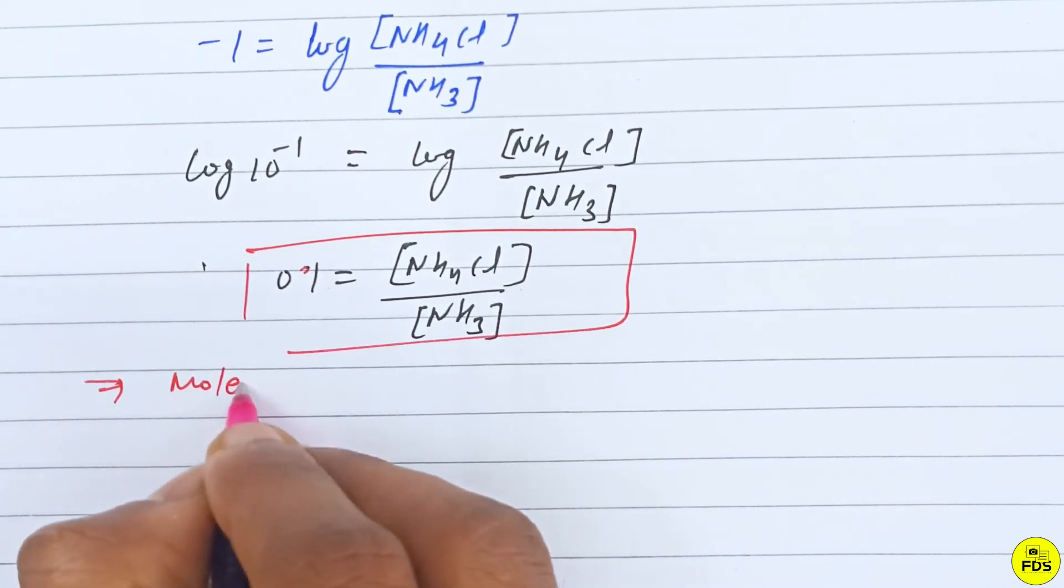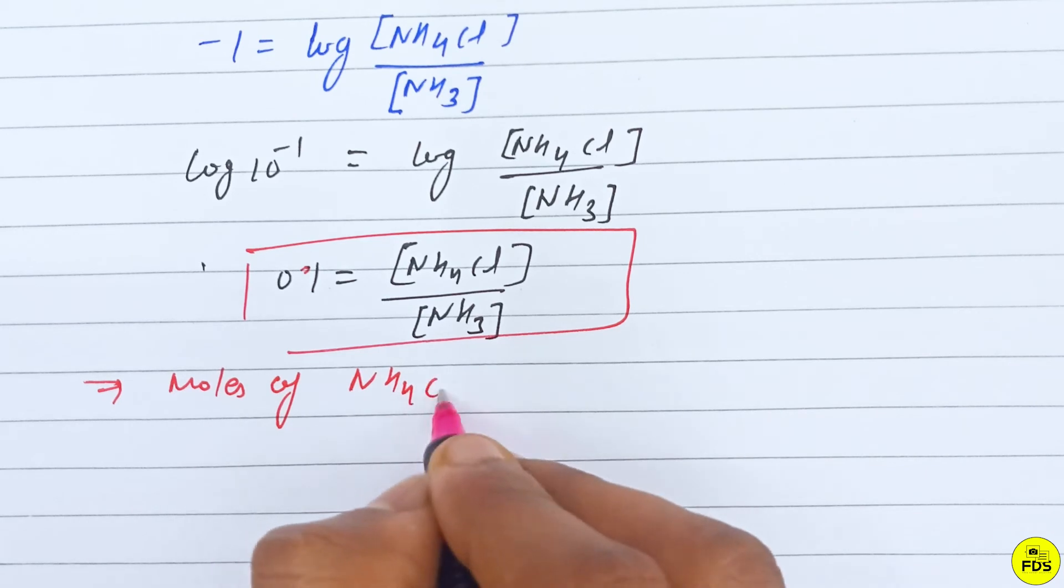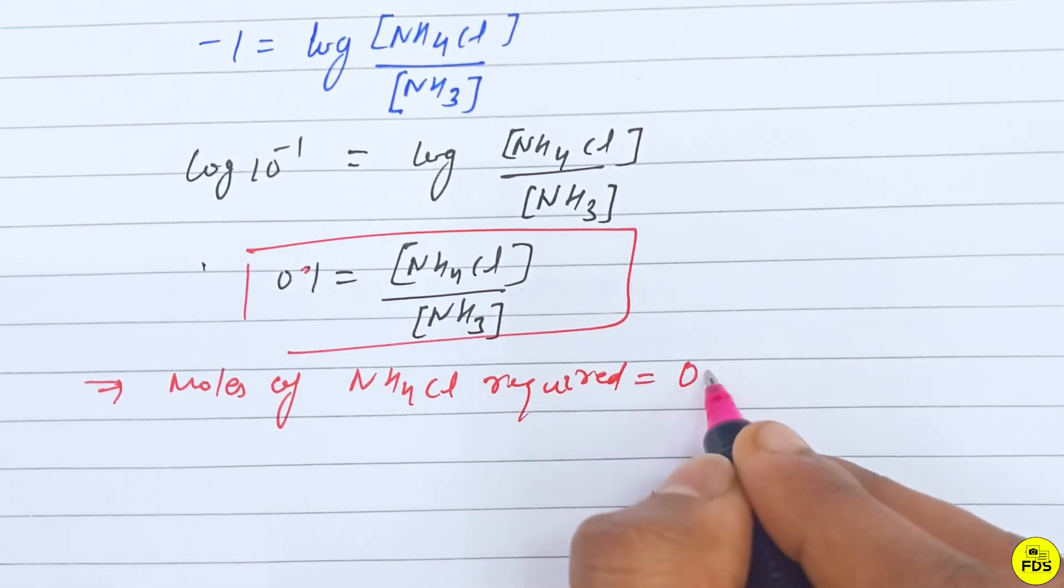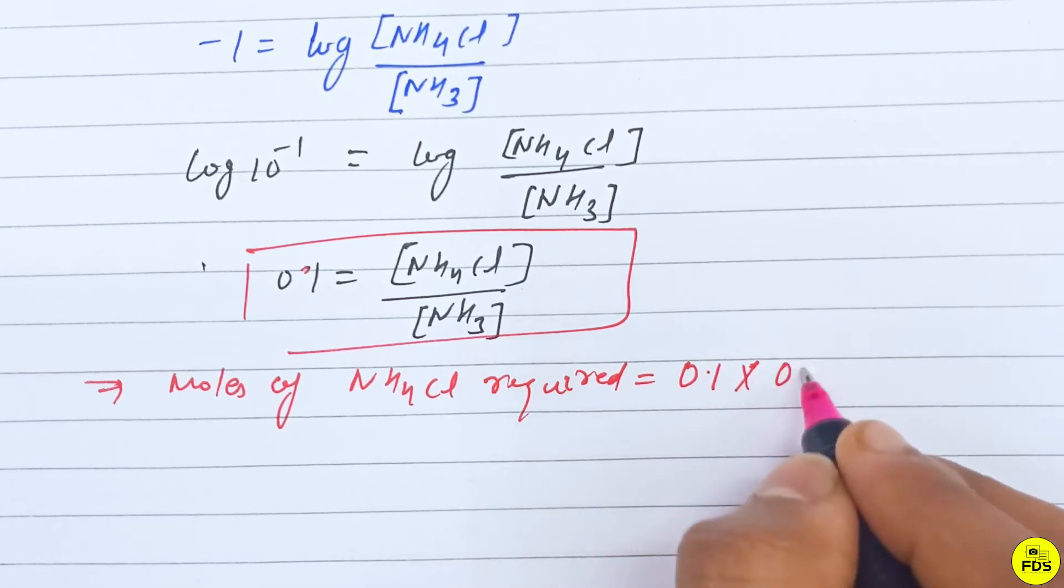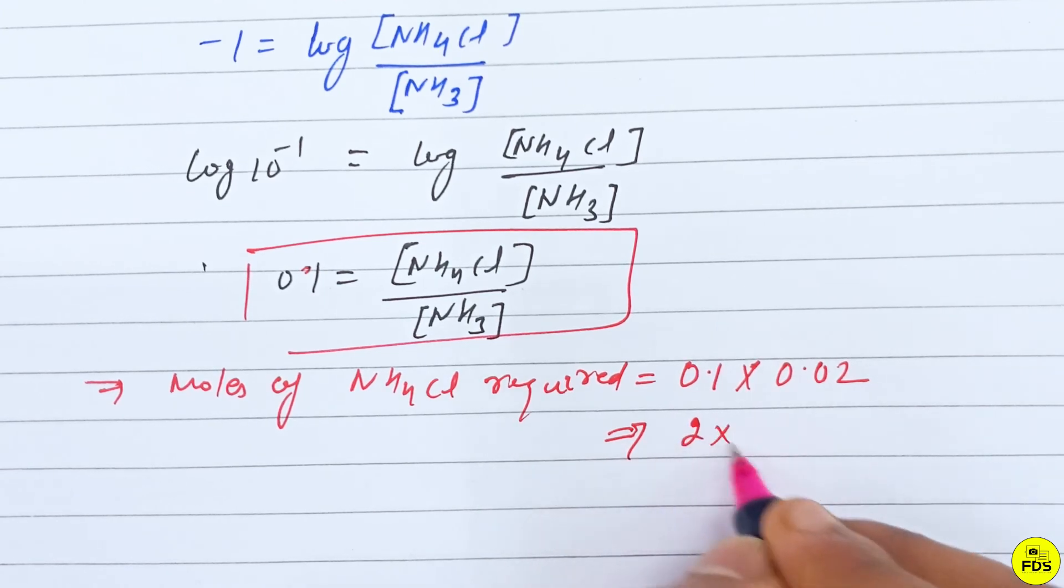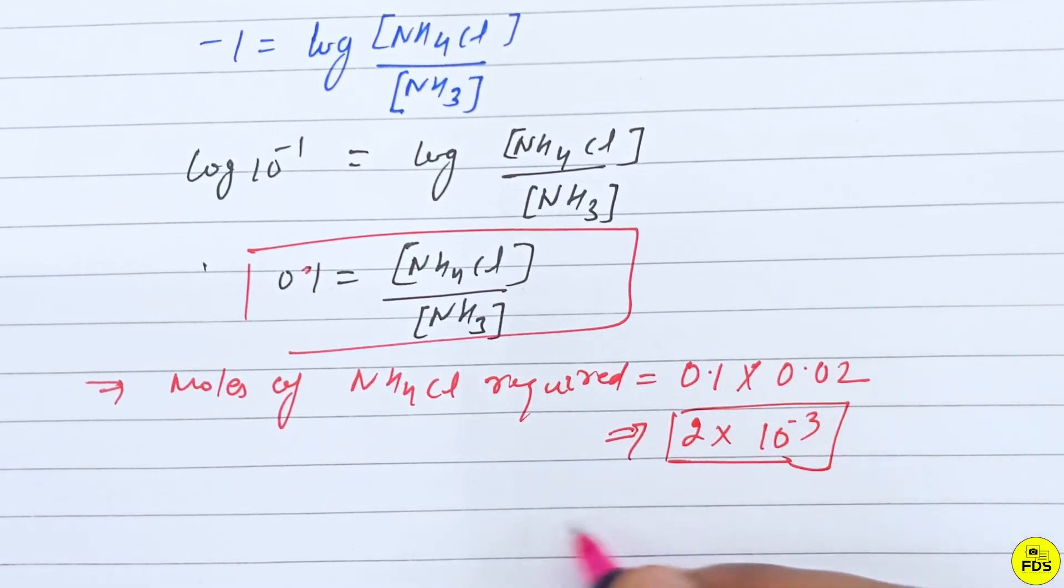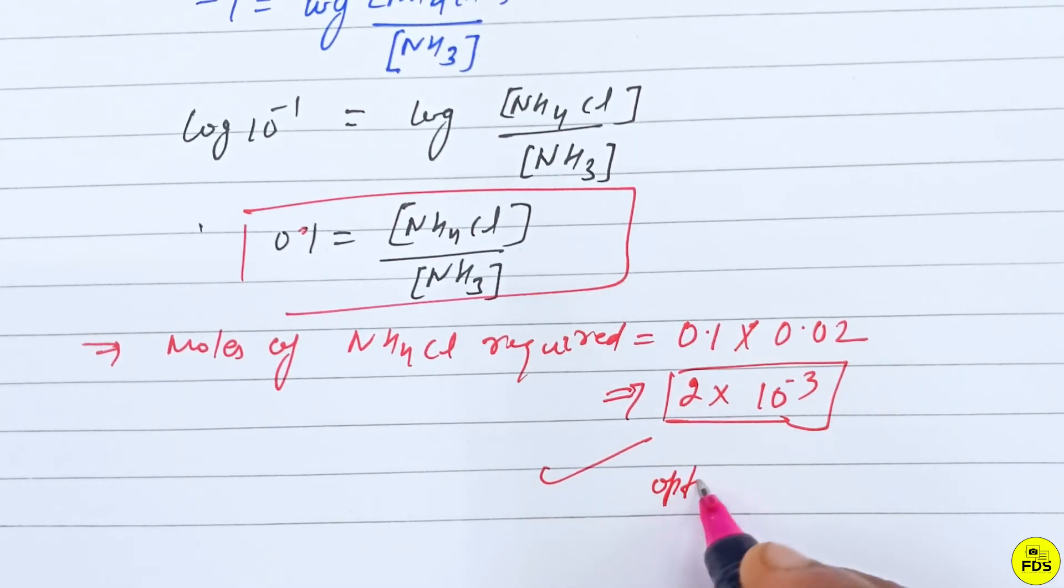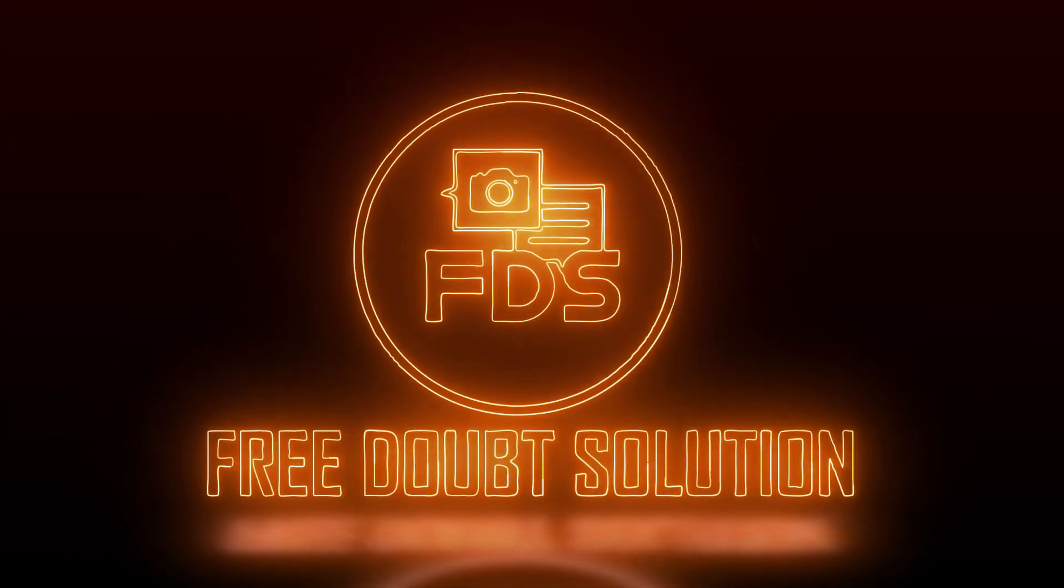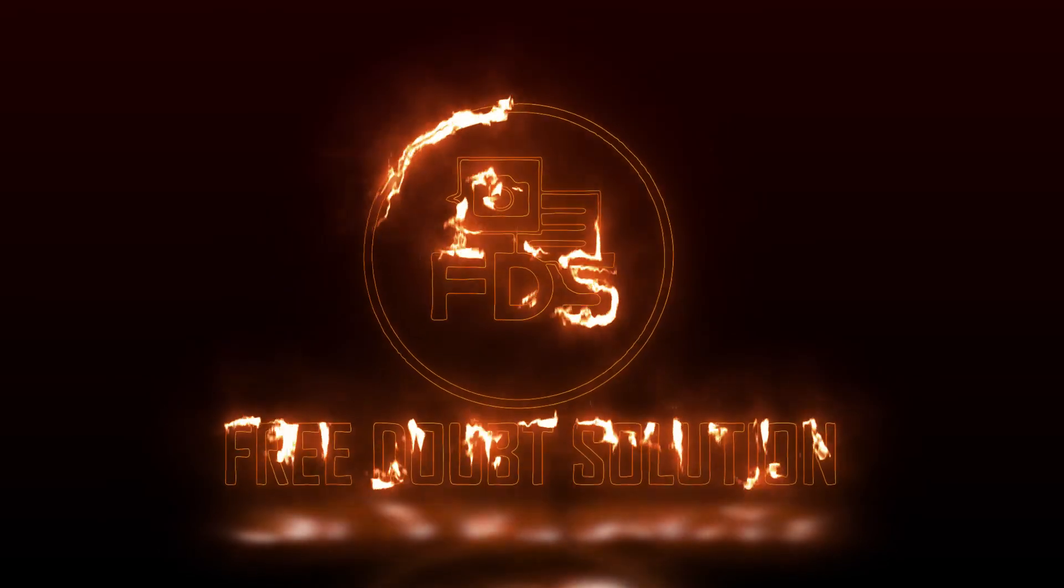So moles of NH4Cl required is equal to 0.1 into 0.02, which equals 2 times 10 to power minus 3. Checking the options, option B is the correct answer.